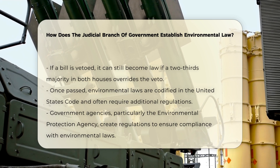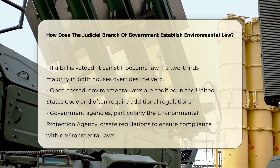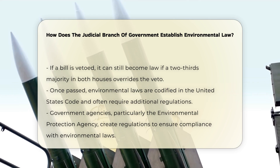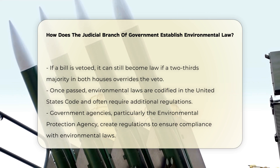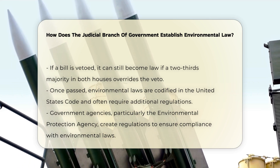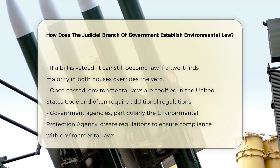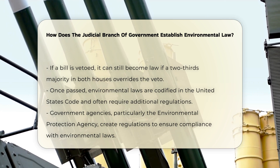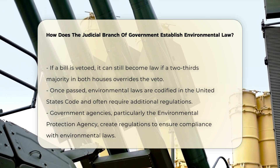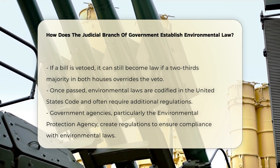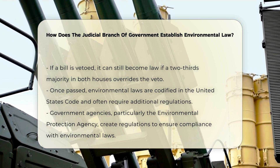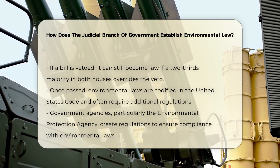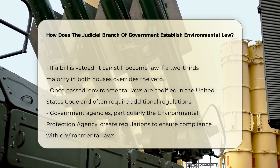Judicial review. The judicial branch becomes involved through judicial review, where courts assess the legality of government actions and decisions related to the environment. Courts ensure that these actions comply with applicable laws and regulations, such as the National Environmental Policy Act (NEPA) and the Clean Air Act.